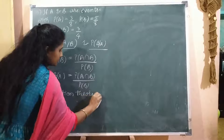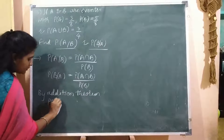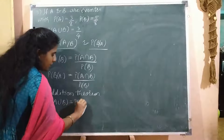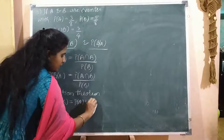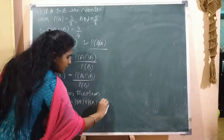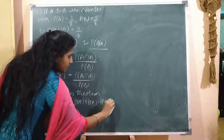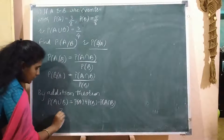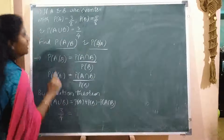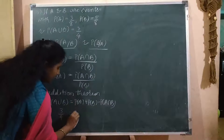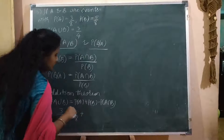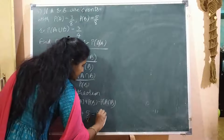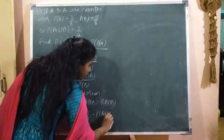By the addition theorem, P of A union B equals P of A plus P of B minus P of A intersection B. P of A union B is given as 3 by 4, P of A is 3 by 8, P of B is 5 by 8, and P of A intersection B is what we need to find.